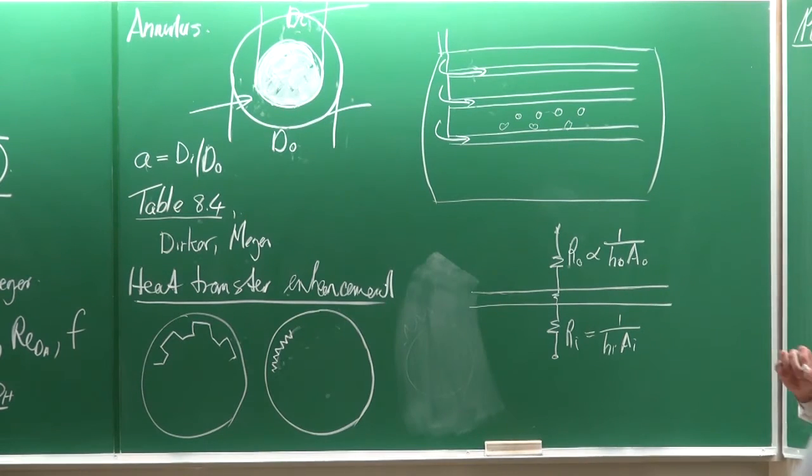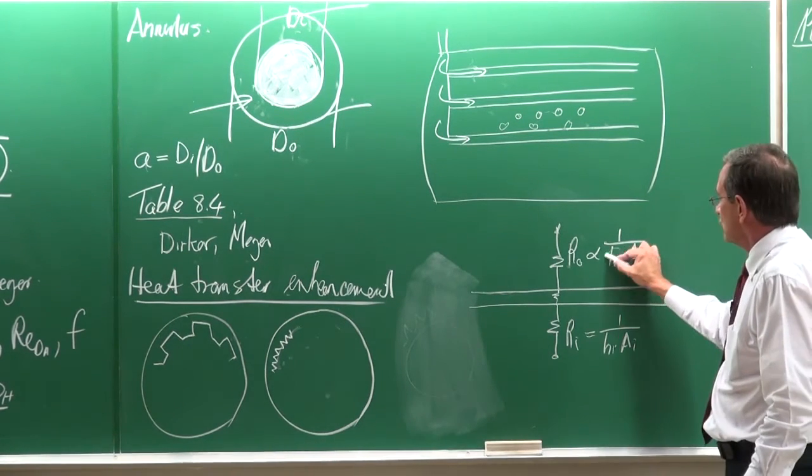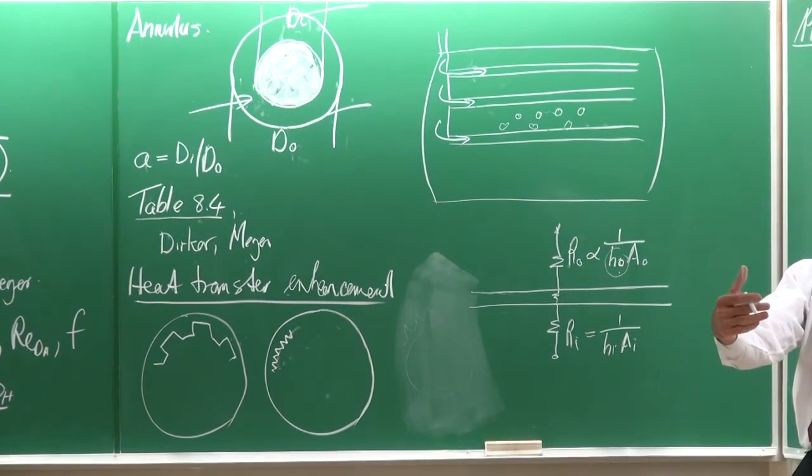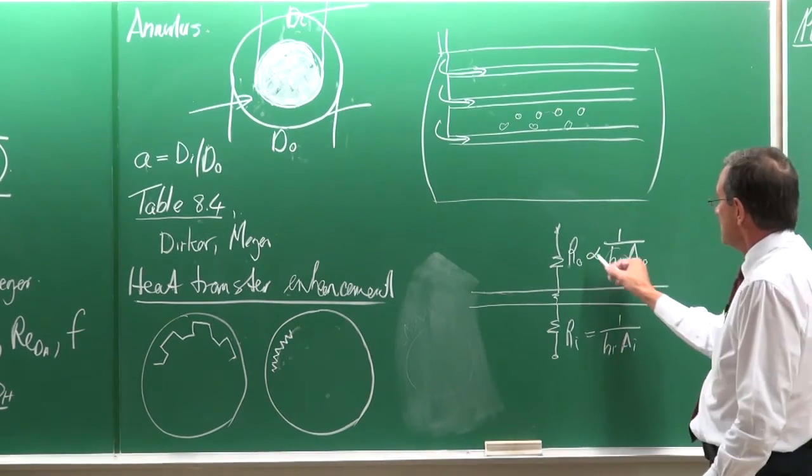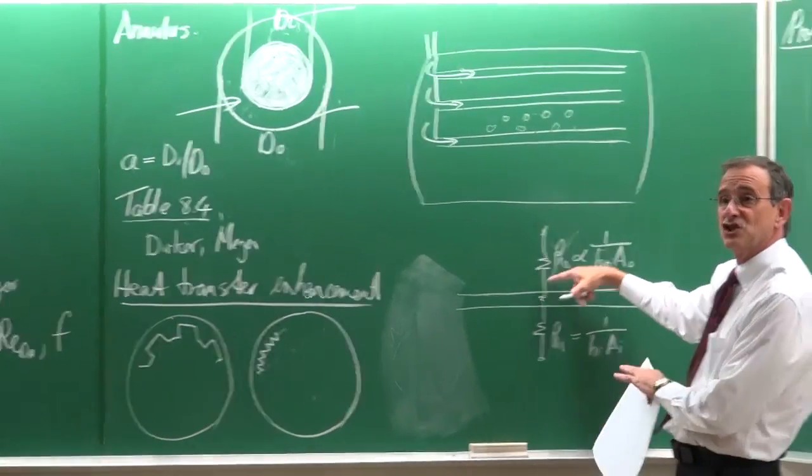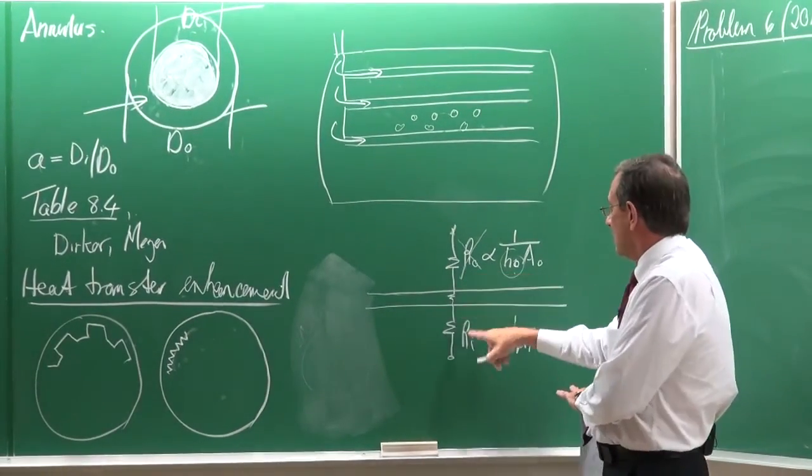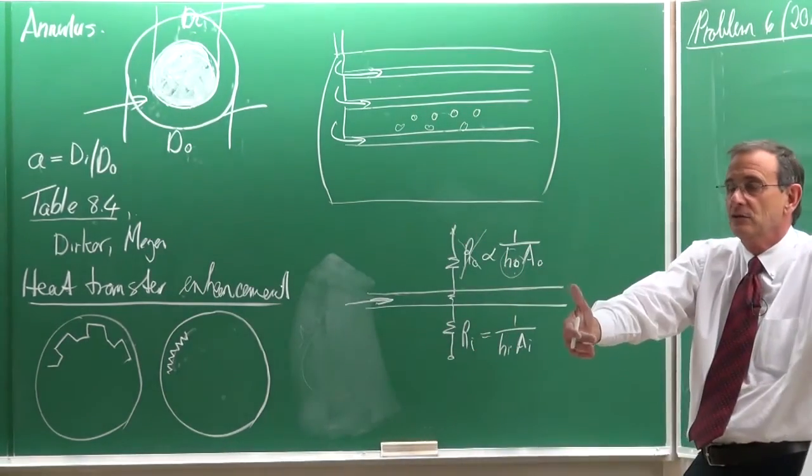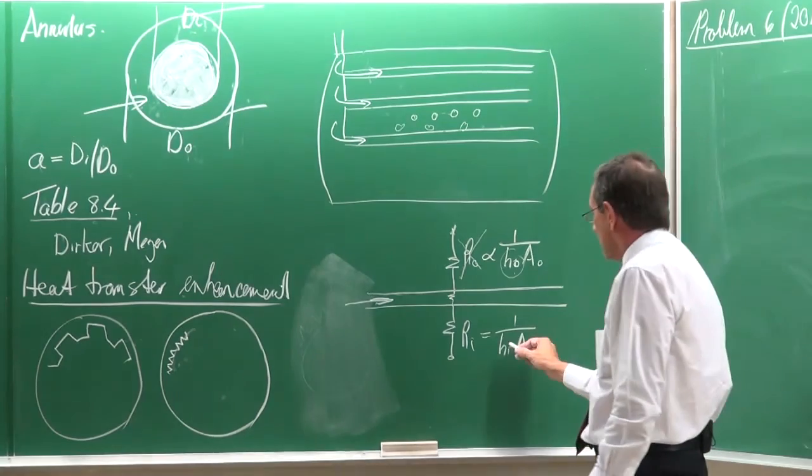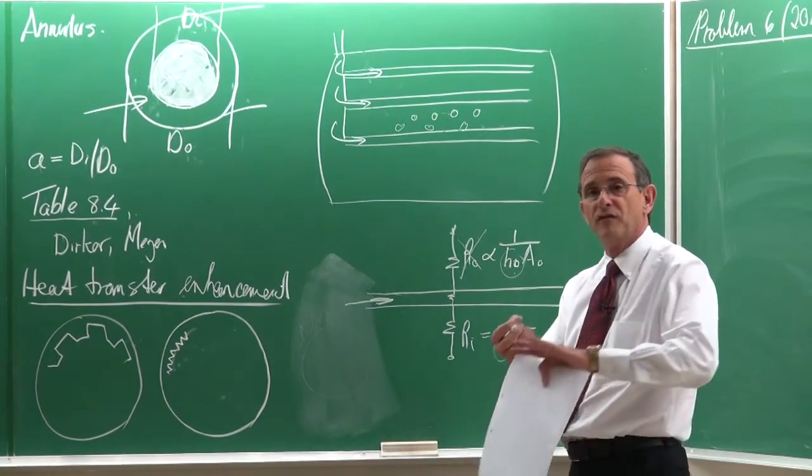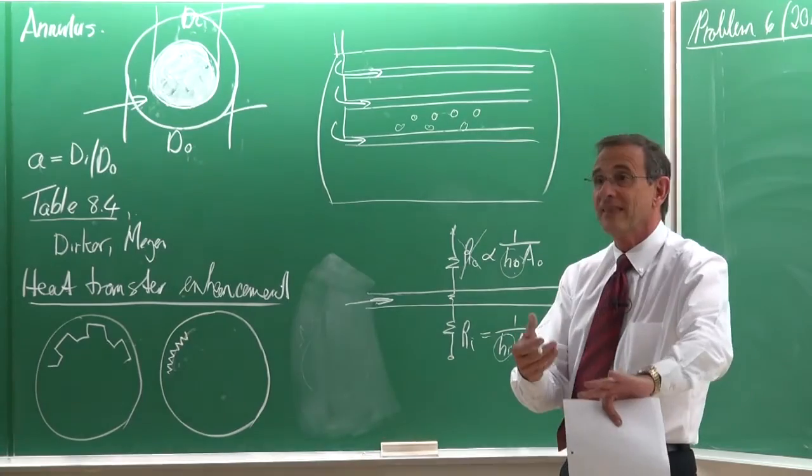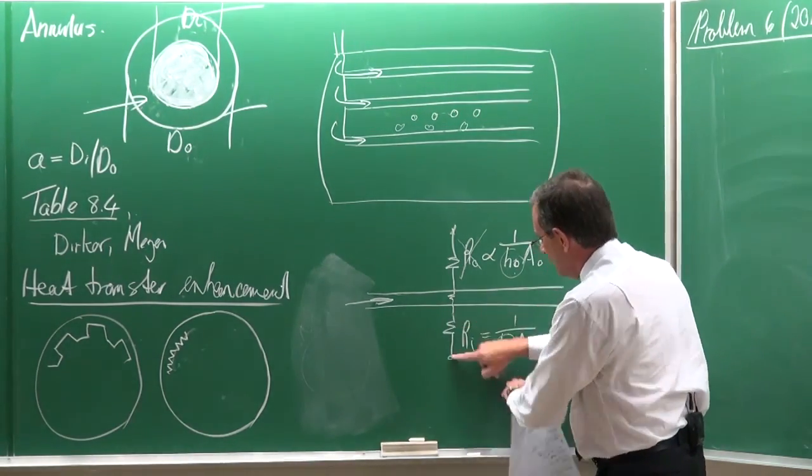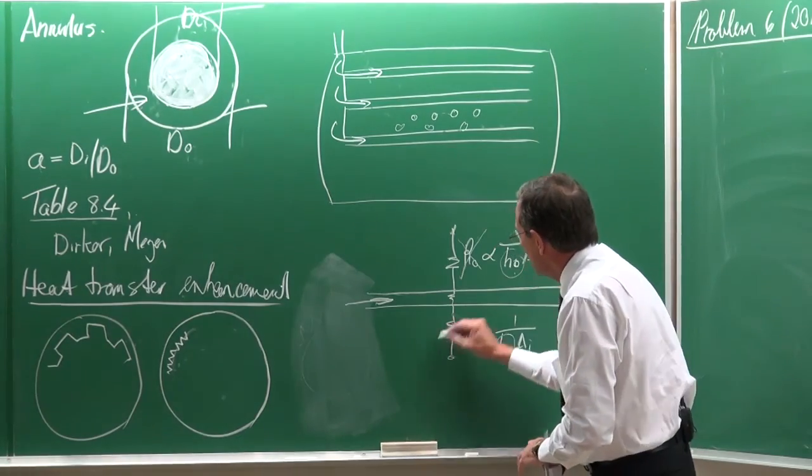boiling. Now, if you have boiling then the heat transfer coefficient is in the order of magnitudes of tens of thousands. 10,000, 20,000, 30,000. It means that this resistance is extremely small. And here you will have water. So, typically in a chiller you cool water from 20 to 10 degrees. And this heat transfer coefficient is of a single phase fluid. So, typically order of magnitude 1,000. So, if you look at this problem then you will see most of the resistance is actually on the inside of the tube.